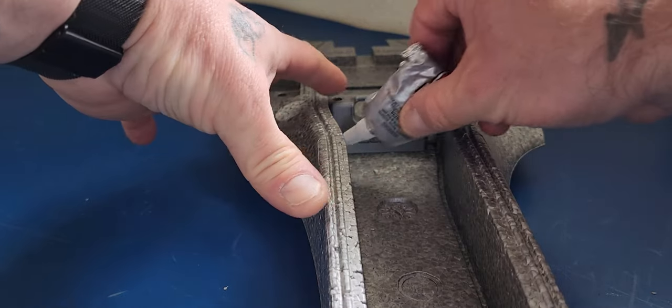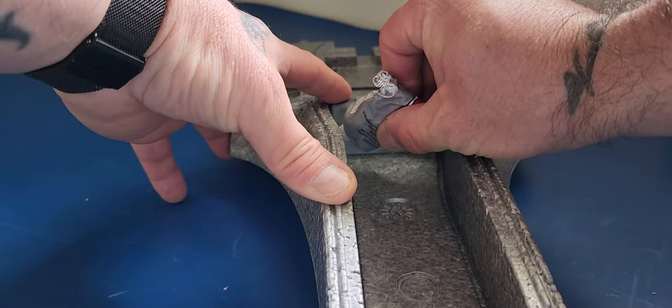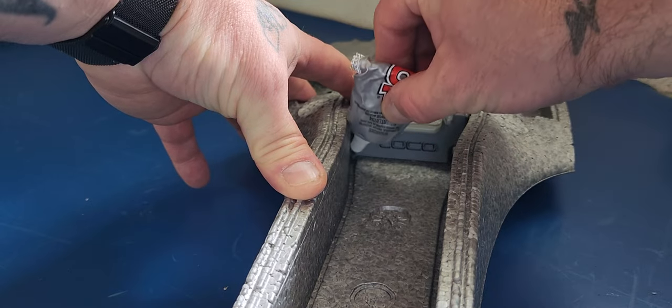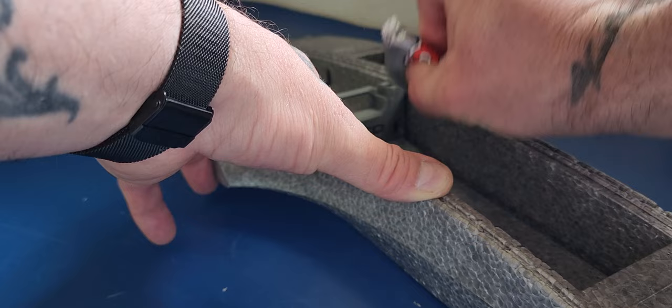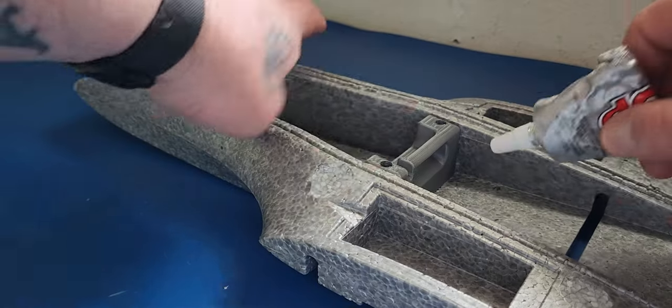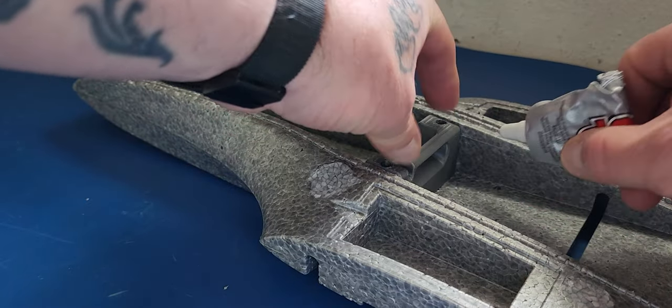Once it's set, then we'll take a little bit of goop and we'll just run a nice little bead over here on the side along the bottom. And we'll do the exact same thing on the back, just a nice thick bead.